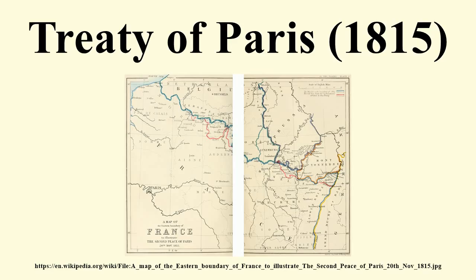However, the coalition occupation, under the command of the Duke of Wellington, was only deemed necessary for three years and the foreign troops pulled out in 1818. In addition to the definitive peace treaty between France and Great Britain, Austria, Prussia and Russia, there were four additional conventions in the Act confirming the neutrality of Switzerland, signed on the same day.